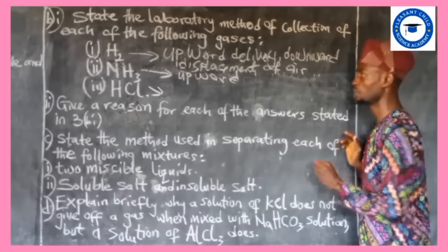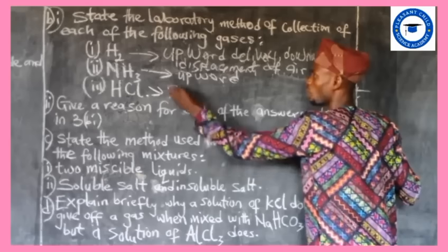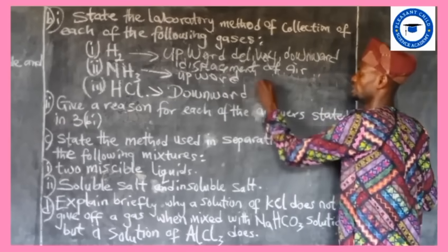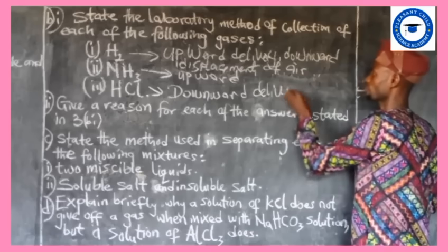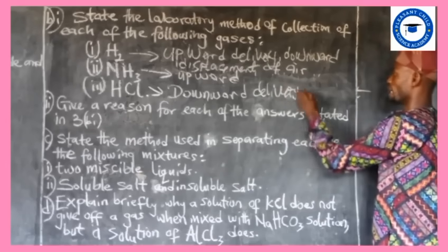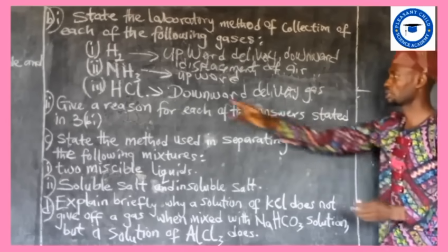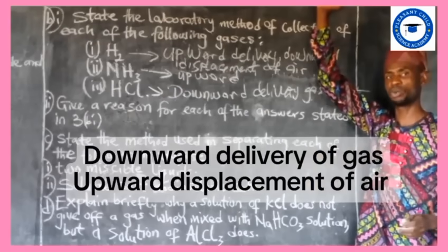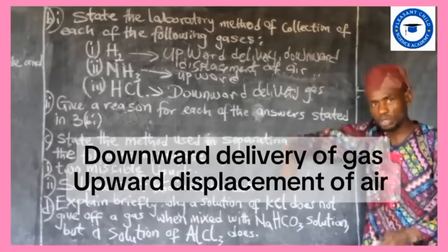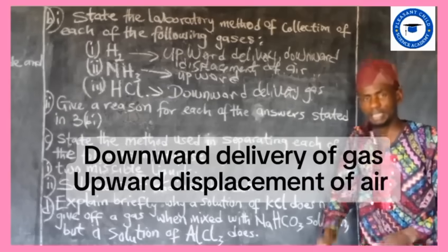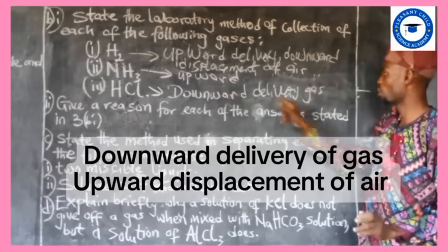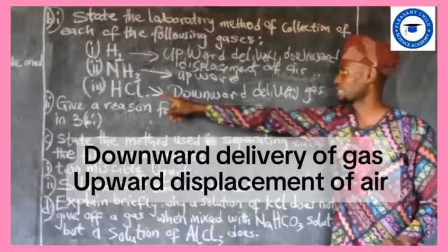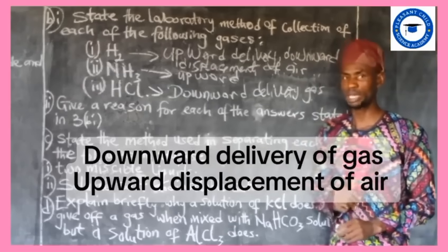For hydrogen chloride gas, the method is different: it is downward delivery of gas, upward displacement of air. The gas comes down through the delivery tube, and the air goes upward. So for HCl gas: downward delivery of gas, upward displacement of air.